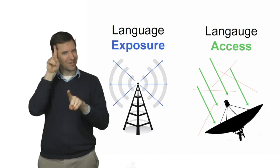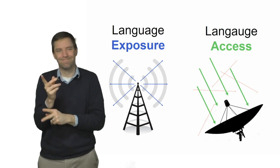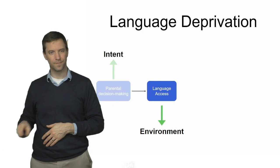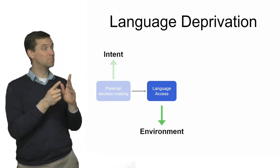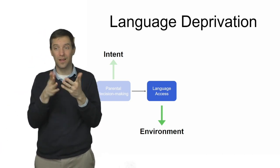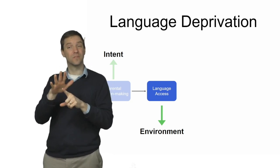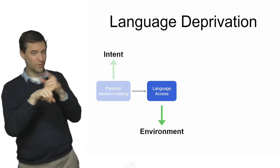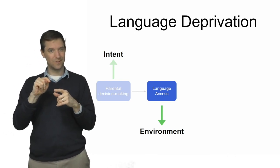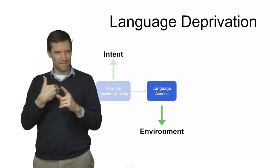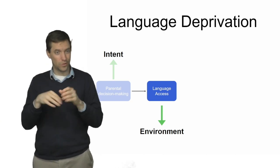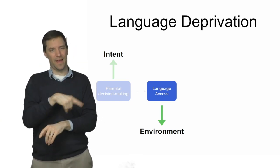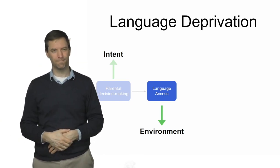For hearing children, exposure and access are typically the same, but for deaf and hard of hearing children, they are often not the same. Sometimes parents' intention is to provide lots of language exposure, but even when that happens, it's still possible that the child doesn't have access to that input, and so the environment doesn't contain the kind of input that is accessible to the child. When people use the term language deprivation in this sense, that is sometimes what they're talking about.